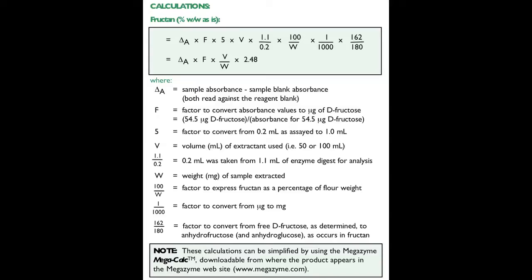5 is a factor to convert from 0.2 mls as assayed to 1 ml. V is the volume in mls of the extractant used, i.e. 50 or 100 mls. 1.1 over 0.2 means 0.2 mls was taken from 1.1 ml of enzyme digest for analysis.